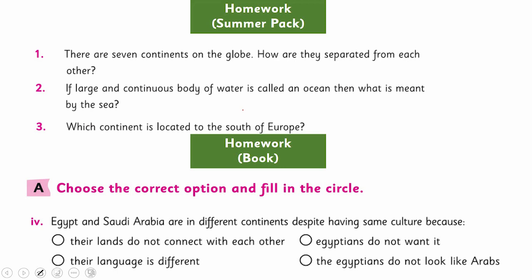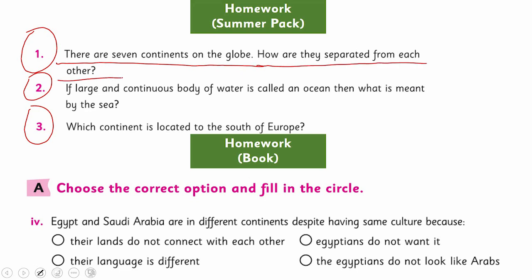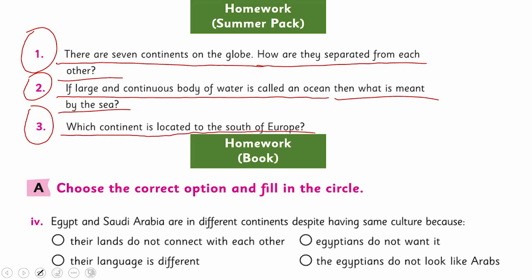The next homework is from your summer pack — the SLO-based questions. When you open the specific SLO for oceans and continents, you will see three questions. Number one: there are seven continents on the globe — how are they separated from each other? As I told you earlier, there are two reasons — you need to mention those. Number two: if a large and continuous body of water is called an ocean, then what is meant by the sea? Is the sea smaller or larger than an ocean? Number three: which continent is located to the south of Europe?